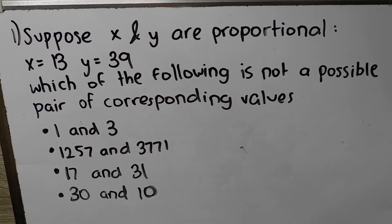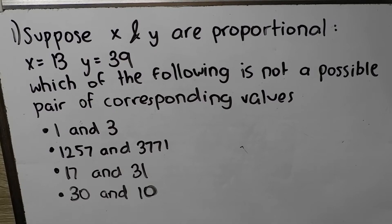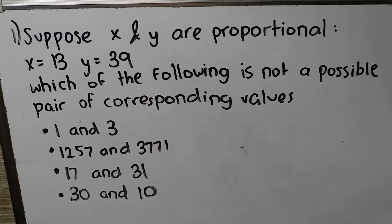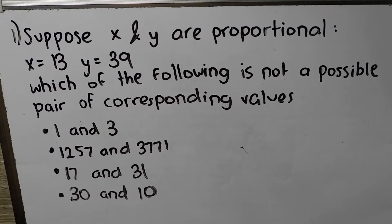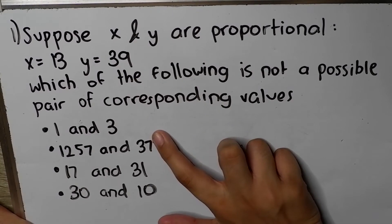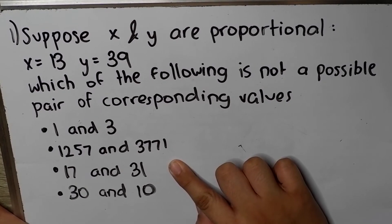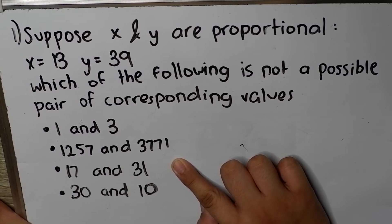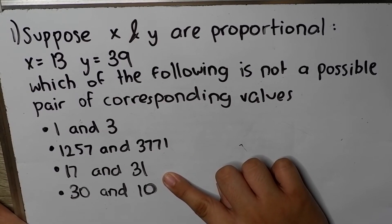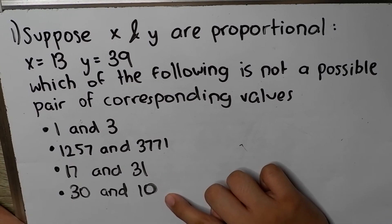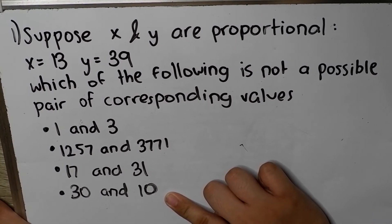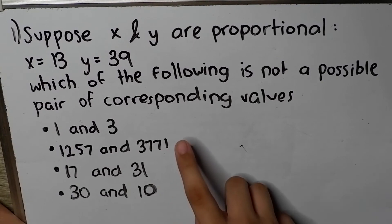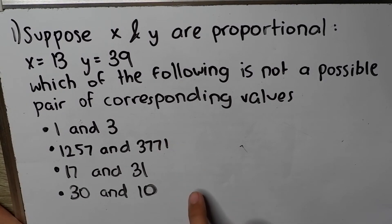This is the first problem for today's video. Suppose x and y are proportional. x equals 13 and y equals 39. Which of the following is not a possible pair of corresponding values? Letter A is 1 and 3. Letter B is 1,257 and 3,771. The third one is 17 and 31. The fourth one, which is letter D, is 30 and 10. So, this is just letter A, letter B, letter C, letter D.